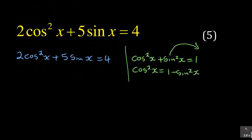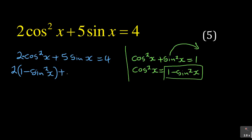So wherever there is cos squared, I replace it with one minus sine squared x. Don't forget the two out front, so it becomes two bracket one minus sine squared x — it's very important to put that bracket to protect the negative sign — plus five sine x, equals four. Notice that where there was cos there is now sine. I've eliminated cos, and now I can deal strictly with sine. It is sine squared, but it leads to a quadratic equation.